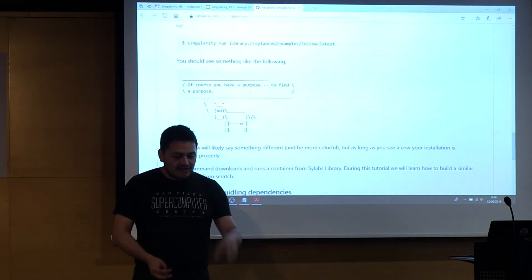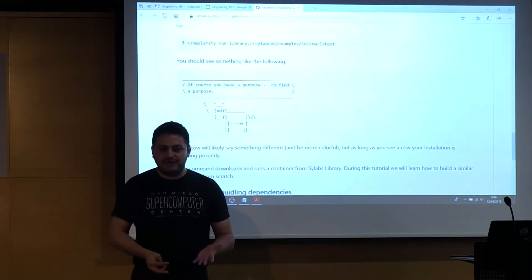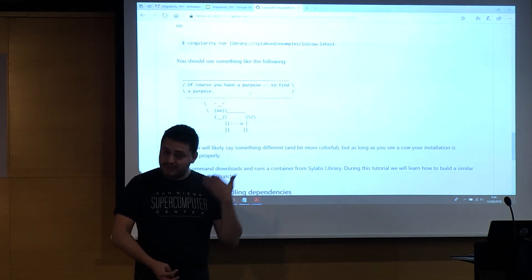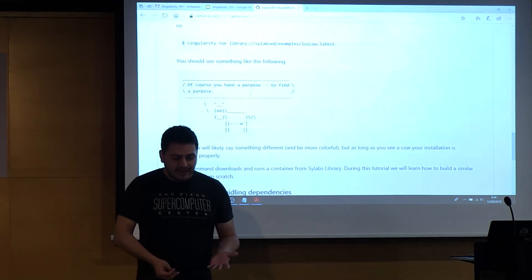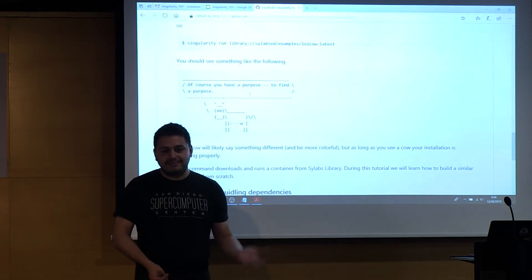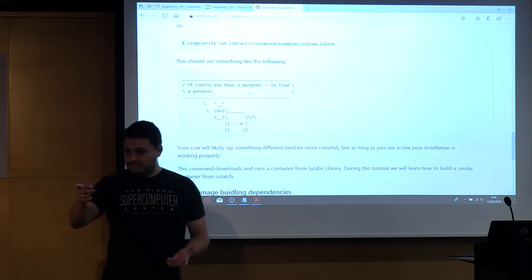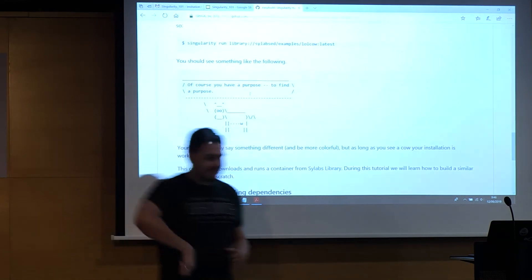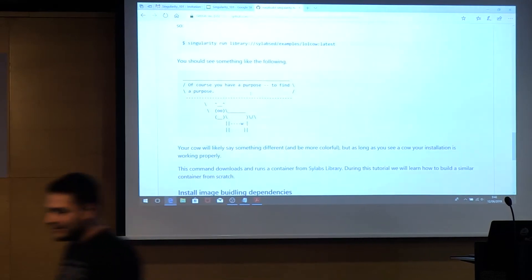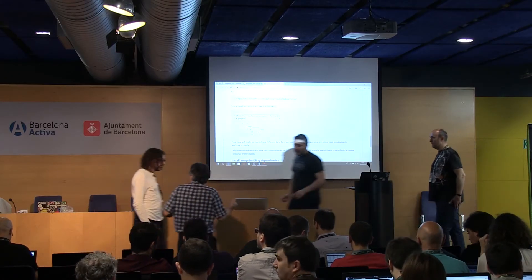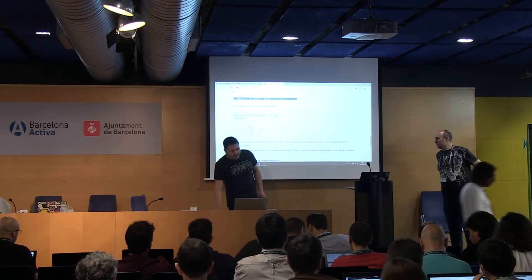If you cannot see the cow in your terminal, please raise your hand — something is happening and we need to fix it. The next session is going to be a lot about containers: playing with containers, moving containers around. The cow is the low-level 101 check. If you already have Singularity installed, you should run this command to see the cow.